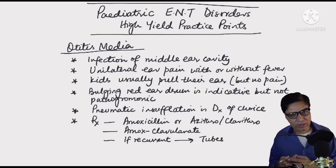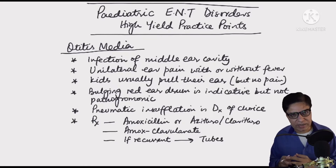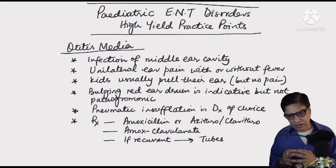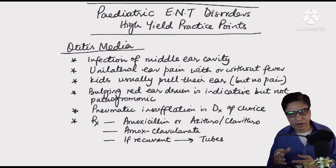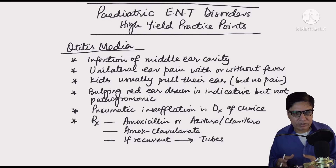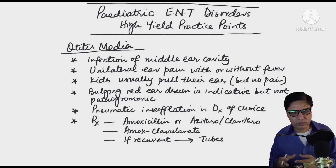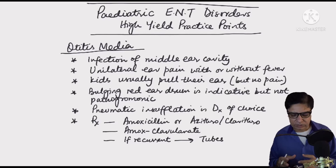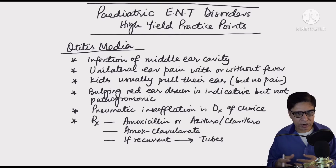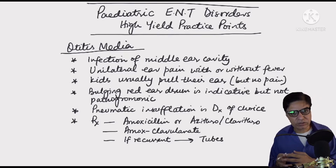If it doesn't clear up, the next step is co-amoxiclav. If it occurs again and again, recurrent otitis media can lead to glue ear — fluid behind the ear — which means progression to chronic otitis media. In that case, we need to equalize pressure on both sides of the membrane by inserting grommets, which allows the fluid behind the middle ear to drain and prevents deafness long-term.